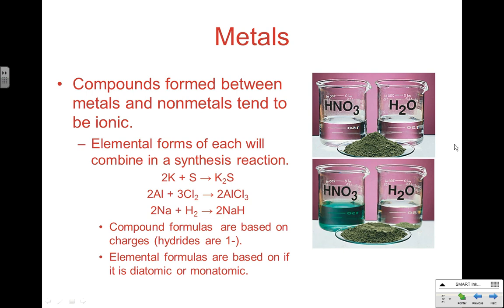If you put a metal together with a nonmetal, it's a fairly simple synthesis reaction and you should be able to predict it. The elemental substances on the left — their formulas depend on whether they're diatomic or not. The diatomic seven — hydrogen, oxygen, nitrogen, fluorine, chlorine, bromine, and iodine — are all diatomic. Most everything else is monatomic. On the right side, we're forming ionic compounds, and that's all about charges based on periodic table position.